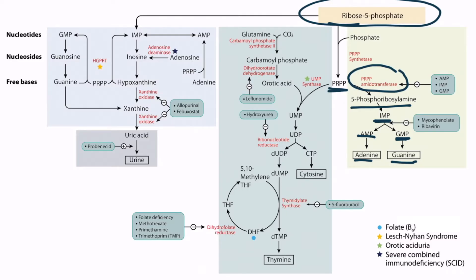It should be pretty intuitive that as purine levels rise, the cell down-regulates their production. From the figure you can see that PRPP imidotransferase is inhibited by AMP, IMP, and GMP.